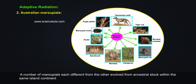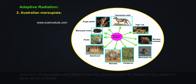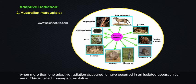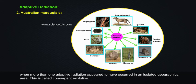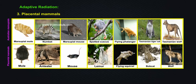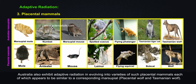Example two: Australian marsupials. A number of marsupials, each different from the other, evolved from ancestral stock within the same island continent, where more than one adaptive radiation appeared to have occurred in an isolated geographical area. This is called convergent evolution. Example three: placental mammals in Australia also exhibit adaptive radiation, evolving into varieties of placental mammals.